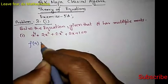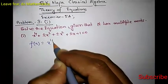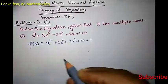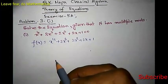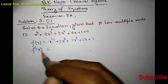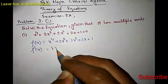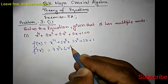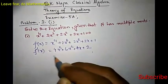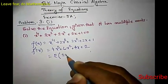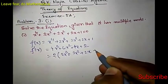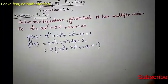Let us suppose the given equation is f(x) = x⁴ + 2x³ + 2x² + 2x + 1. Since it has multiple roots, the multiple roots will also be a zero of f'(x). So let us find f'(x): 4x³ + 6x² + 4x + 2, which we can write as 2 times (2x³ + 3x² + 2x + 1).